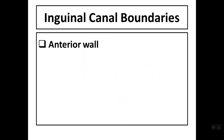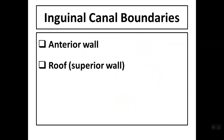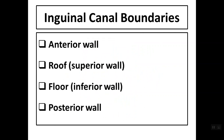The boundaries of the inguinal canal are as follows: it has an anterior wall, a roof or superior wall, a floor or inferior wall, and a posterior wall.